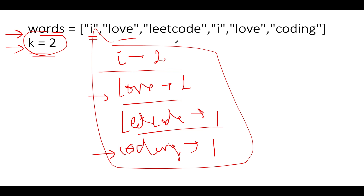Along with the map, we create a priority queue — a min-heap. The key challenge is writing the comparator correctly. There are two constraints: return the top k frequent elements, and in case of collision, return the one with the lower lexicographical order first. We use a min priority queue so the element with the least frequency is polled first, and on collision, the one with higher lexicographical order is returned first and therefore deleted.